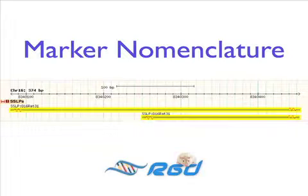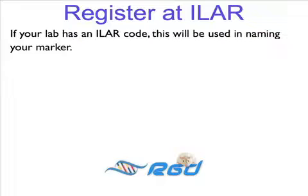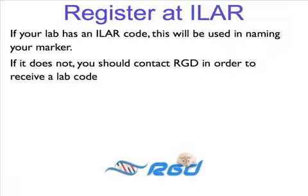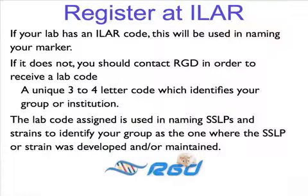Before we begin talking about the details of naming markers, I would like to point out the importance of registering your research group, lab, or institution at the Institute for Animal Research, or ILR. If your lab has an ILR code, this will be used in naming your marker. If it does not, you should contact RGD to receive a lab code — a unique three- to four-letter code which identifies your group or institution. This code is used in naming SSLPs and strains to identify your group as the one where the SSLP or strain was developed and/or maintained.